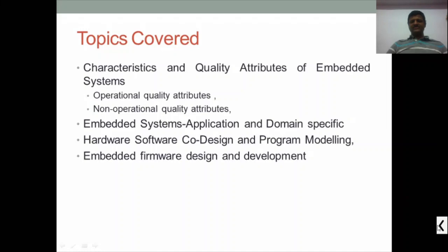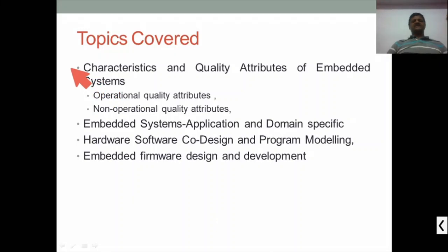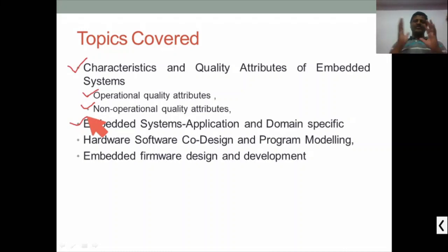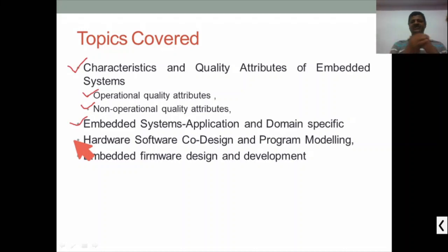These are the topics we'll cover: first, characteristics and quality attributes of embedded systems, where we'll discuss operational and non-operational attributes. Then embedded system applications from both application and domain points of view. The next two sessions relate to hardware-software co-design — how much time, power, hardware, and software an embedded system requires, and different modeling approaches. The last part covers formal design and its development.